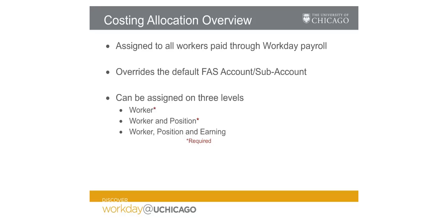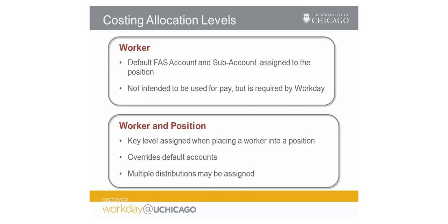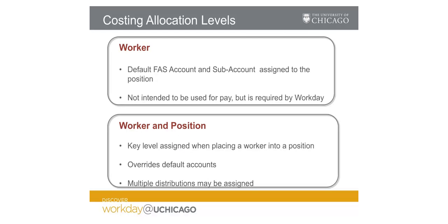There are three levels upon which costing allocations may be assigned within Workday. First is at the worker level, which is the default funding required by Workday but never used to pay an employee. Only one account can be entered at the worker level. The second required level is assigned at the worker and position level. Once a worker is placed into a position, this is when actual costing allocations will be assigned and from which workers will be paid.